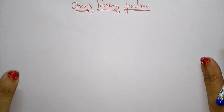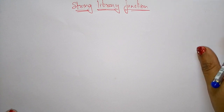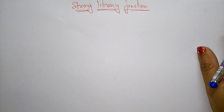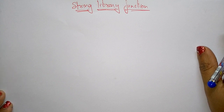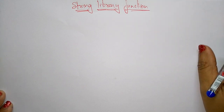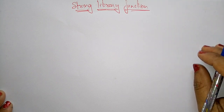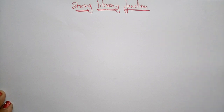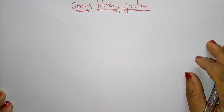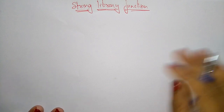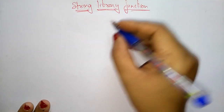Coming to the next topic in computer programming: string library functions. We have seen so many library functions. These library functions are useful — whenever the program is at compile time, the main program is linked with the library function and it gives the result. Library functions include some predefined functions that are used to handle tasks; when you call the function, those predefined definitions will be stored in the library functions.